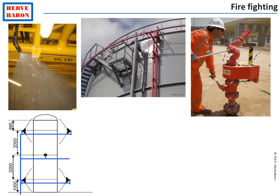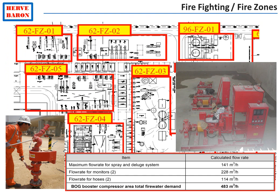Spraying water on equipment can be done automatically by what is called a deluge system, or can be done manually by a fire monitor. A deluge system is provided systematically on all equipment of offshore facilities due to their close proximity. It is scarcely used onshore as access is available to spray equipment manually with fire monitors. Once the plant territory has been split into different fire zones, safety estimates the amount of fire water required for firefighting in each fire zone, and then takes the maximum amount among all fire zones to define the capacity of the fire water storage and pumping system.